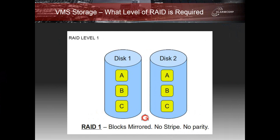RAID 1 requires a minimum of two disks and is known as mirroring. When a drive has information written to it, it goes to both disks simultaneously. The operator only sees a single drive letter — whether it's C, D, E, or whatever — they don't see two separate letters. That's taken care of by the disk controller and the hardware behind the system. If you lose either one of those disks, the system will operate exactly the same and you will not lose any data.